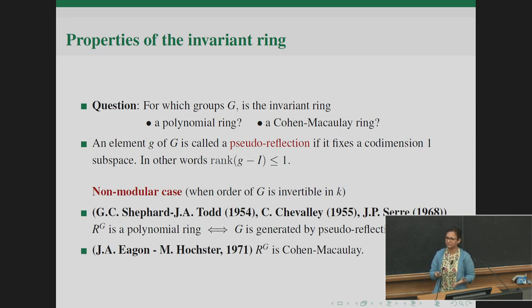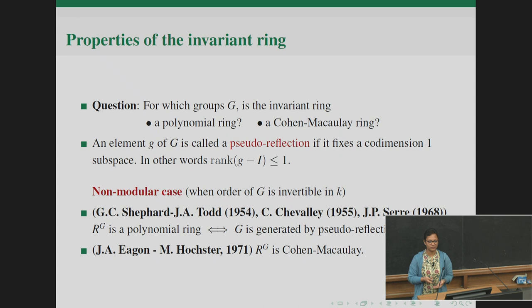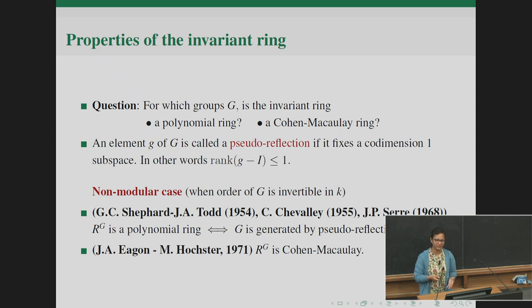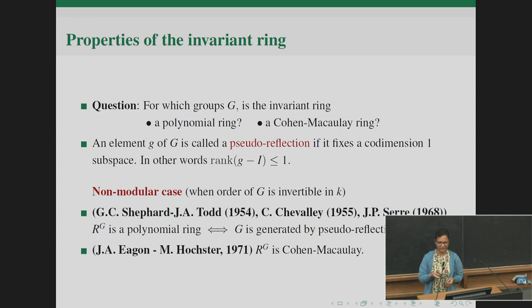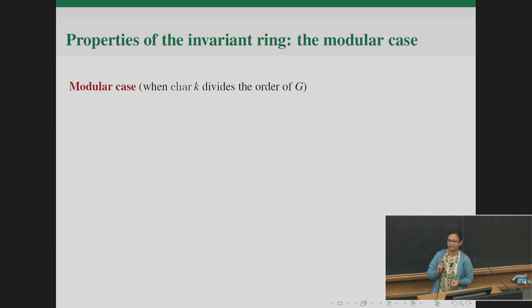Let's look at some classical results. Invariant theory was developed over the complex numbers, so many results fall into the non-modular case where the order of the group is invertible in the field k. Two main classical results in this setting are by Shephard-Todd, Chevalley, and Serre — characterizing R^G as a polynomial ring if and only if G is generated by pseudo-reflections — and by Hochster and Eagon, who prove that in the non-modular case the invariant ring is always Cohen-Macaulay.